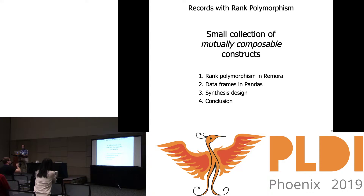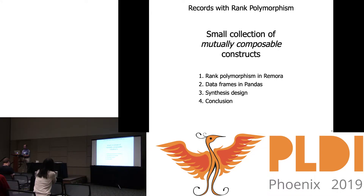For the benefit of those not familiar with APL, I'll go over rank polymorphism and how it works specifically in the context of Remora, the language I'm designing, and also what a data frame is and what Pandas offers in terms of functionality. Then I'll explain the design I came up with for record types in Remora after looking at several other systems — including Racket, Python, Standard ML, and a few others. You can interpret this table of contents as: what I have, what I want, and how I'm going to get it.